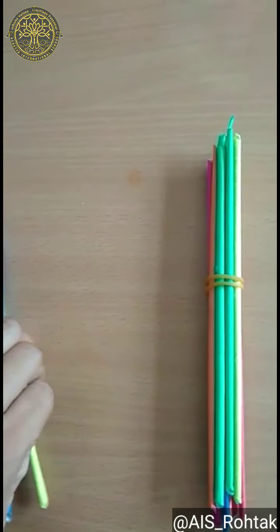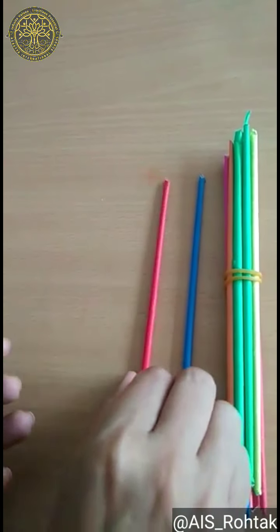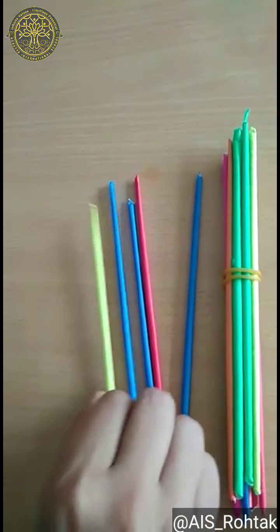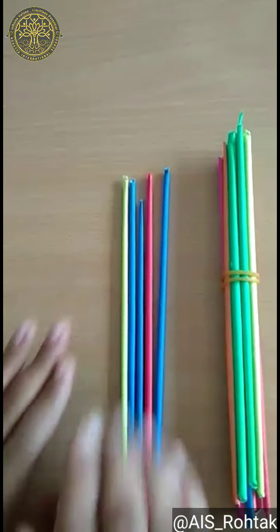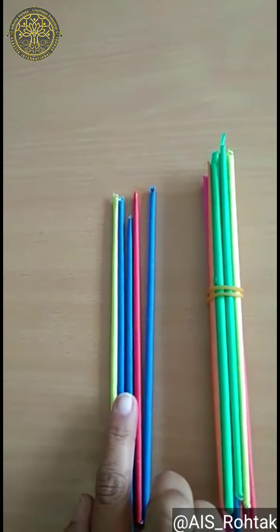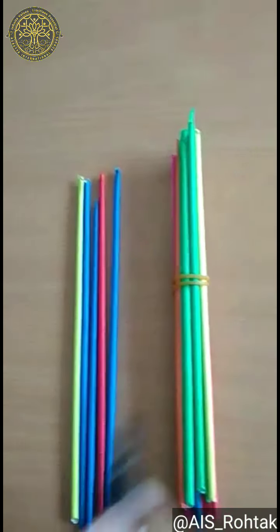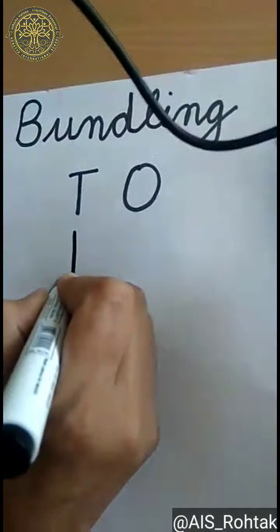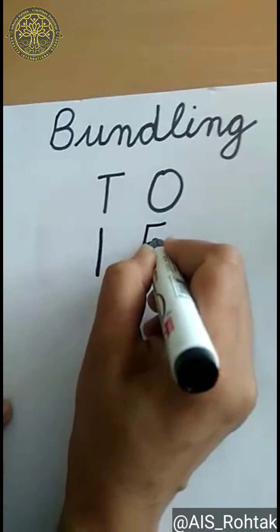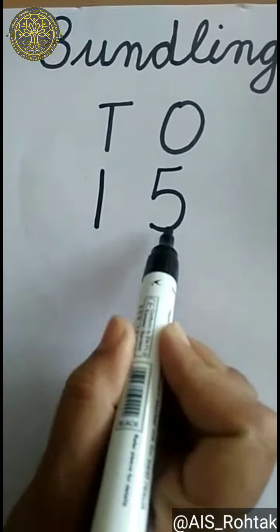And I have some loose sticks also. 1, 2, 3, 4, 5. So how many loose sticks do I have? I have 5. So that is 5 ones and 1 ten. I will write 1 ten and 5 ones — it becomes 15.